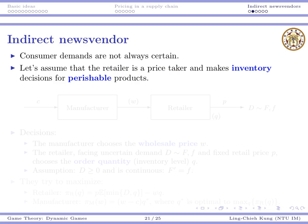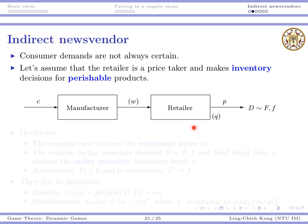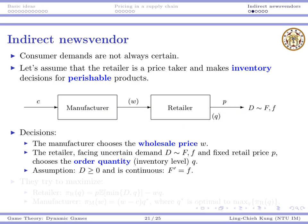Suppose consumer demands are not certain. The retailer is a price-taker, so the retailer cannot make a pricing decision because the price is fixed in this industry. But the retailer can make inventory decisions for perishable products. The retailer buys from the manufacturer and sells to consumers.